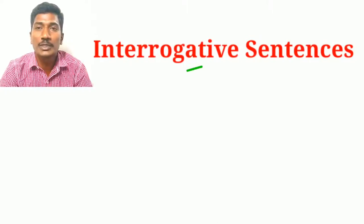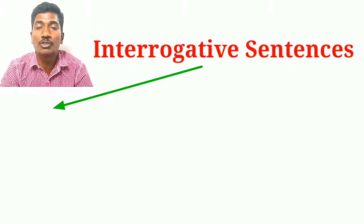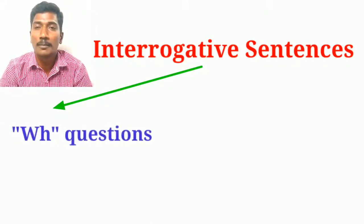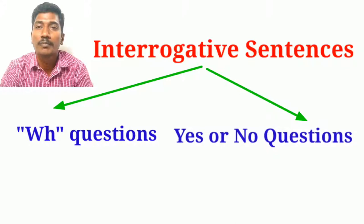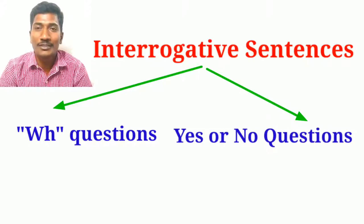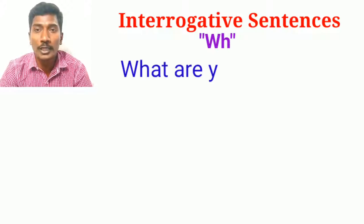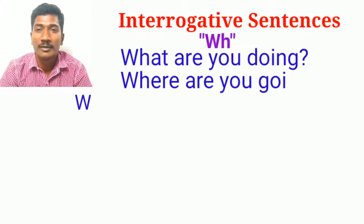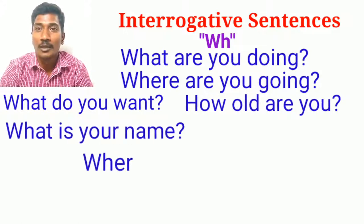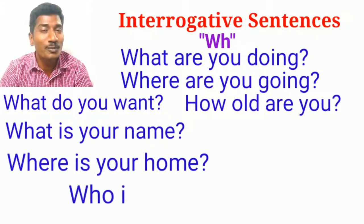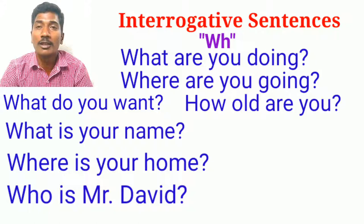In interrogative sentences there are two different kinds in English. They are wh-questions and yes-or-no type questions. Interrogative wh-questions start with wh-words. For example: What are you doing? Where are you going? What do you want? How old are you? What's your name? Where is your home? Who is Mr. David? These are all wh-questions. They begin with a wh-word and end with a question mark.